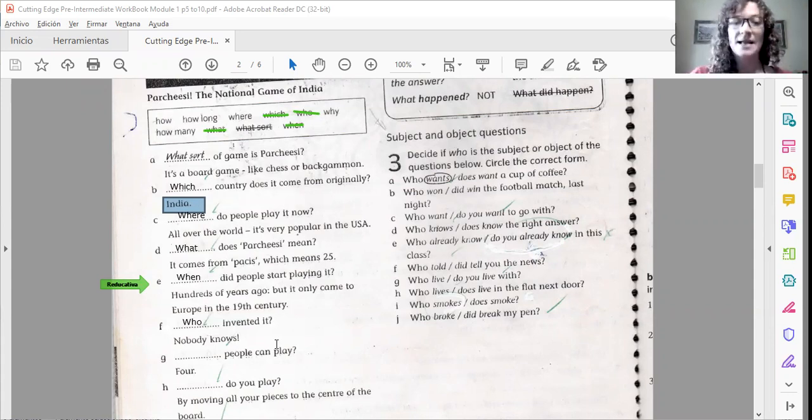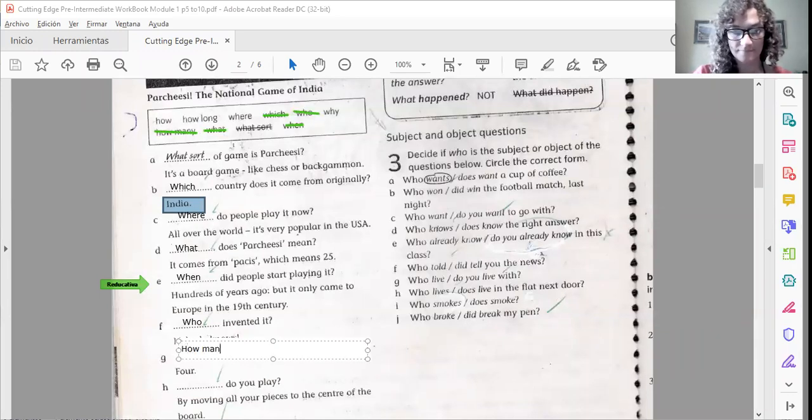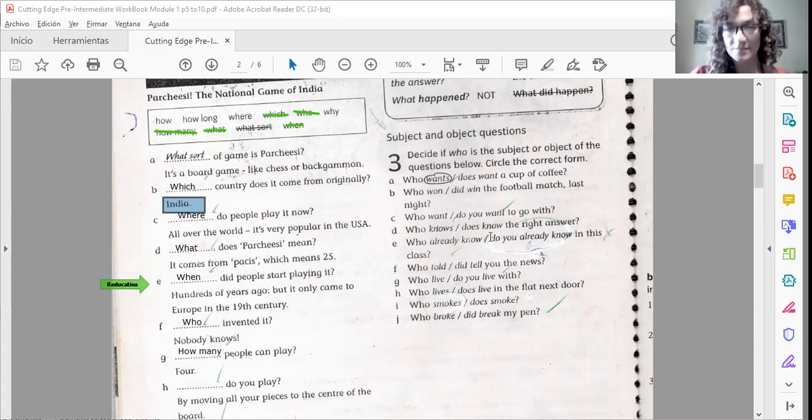Letter G. How many people can play? The answer is four. It's an amount of people. So the question would be how many people can play. What sort, qué tipo. These are complex question words, not only one word forms the question, but like how much does something cost, what kind of music do you like, how many people can play, how much sugar do we have.